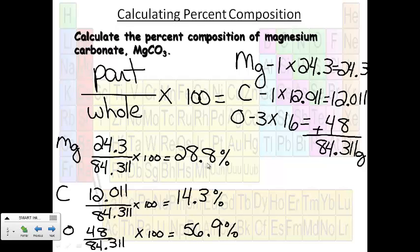So 28.8% was magnesium, 14.3% was carbon, and 56.9% was oxygen. So you want to do your part, which you get when you do your molar mass over here, over your whole, which is the complete molar mass, times 100. That'll get you percent composition.